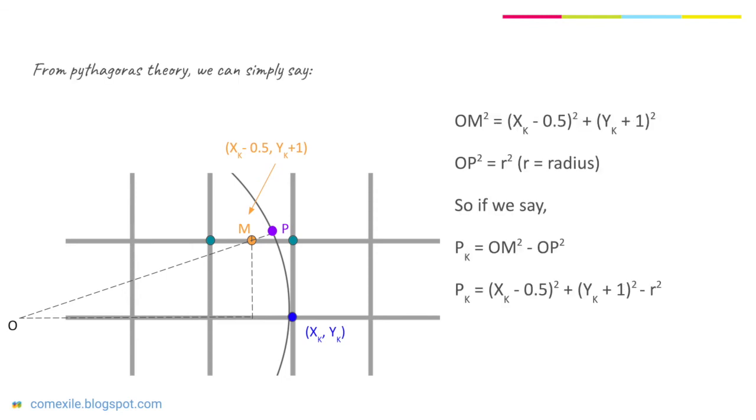From Pythagoras theorem we can determine OM² and we know OP² is r² where r is the radius. So if we say pk is (OM² - OP²) we can get this equation for pk.